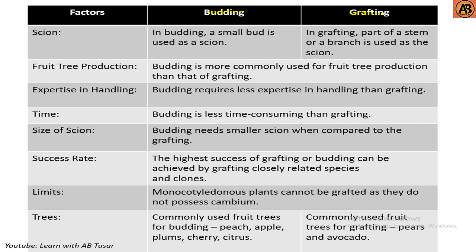Dependent on scion, we can identify budding and grafting. In budding, a small bud is used as a scion, and in grafting, part of a stem or branch is used as the scion. Budding is more commonly used for fruit reproduction than grafting. Budding requires less expertise in handling than grafting. Budding is also less time-consuming than grafting.